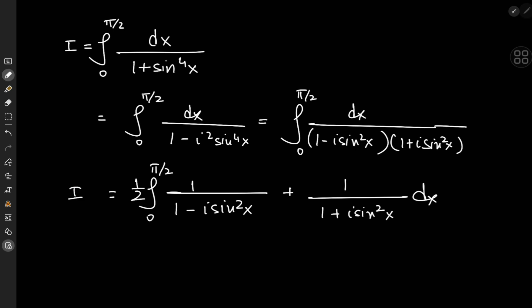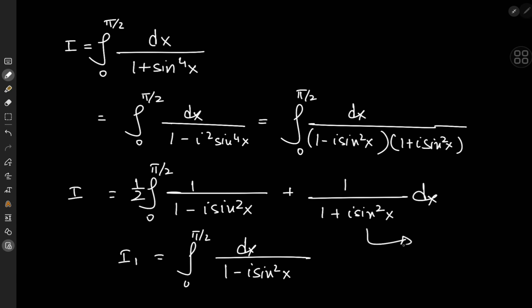So I'm interested in two integrals. I'll call I₁ the integral from 0 to π/2 of dx divided by 1 minus i·sin²x, and I₂ the other integral. I'll evaluate them and just add up the results.